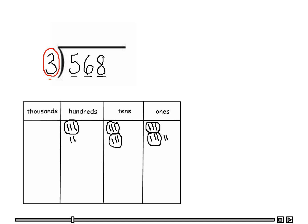In order to divide this, we need to move each one in the hundreds to the tens place. One hundred is ten tens, so we need to make ten tens. Let me change the color here. So here's one, two, three, four, five, six, seven, eight, nine, ten. And as you can see I have one group, two, three, and we have one left over.